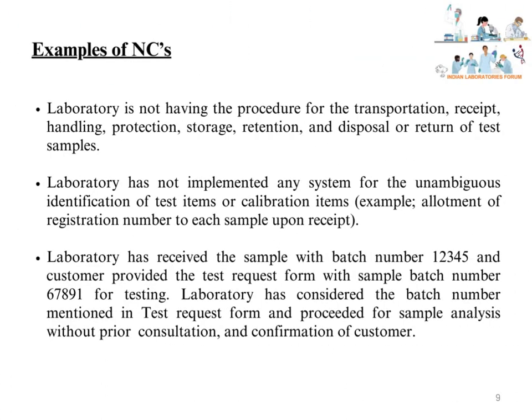Examples of non-conformances as per Clause 7.4: The laboratory is not having a procedure for the transportation, receipt, handling, protection, storage, retention, and disposal or return of test samples. The laboratory has not implemented any system for the unambiguous identification of test or calibration items. The laboratory received a sample with batch number 12345, but the customer provided a test request form with sample batch number 67891. The laboratory considered the batch number mentioned in the test request form and proceeded for sample analysis without prior consultation and confirmation from the customer about the batch number of the sample.